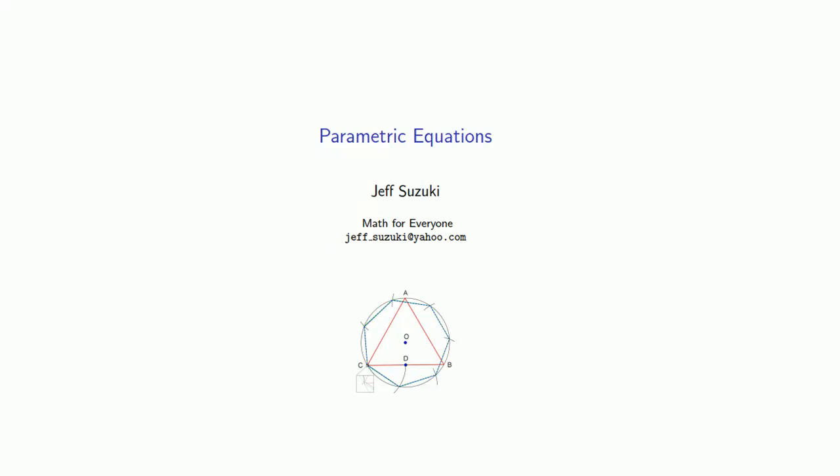Now that we have a geometric interpretation of vectors as a directed distance, we can use these to describe equations for geometric objects like lines and planes. Because these equations generally have some sort of parameter in them, we refer to them as parametric equations.